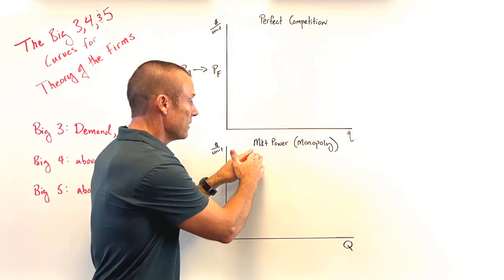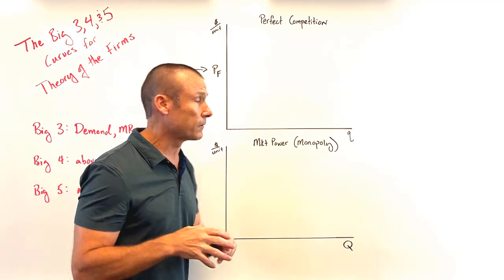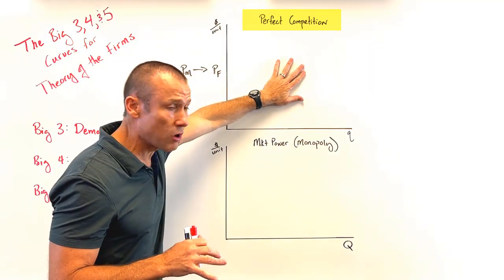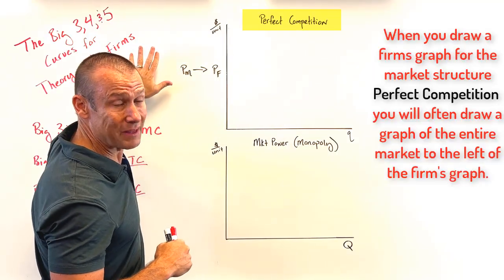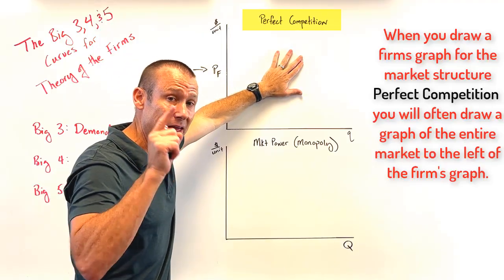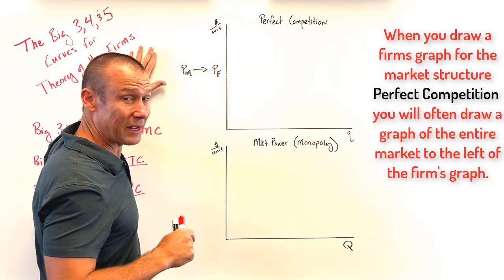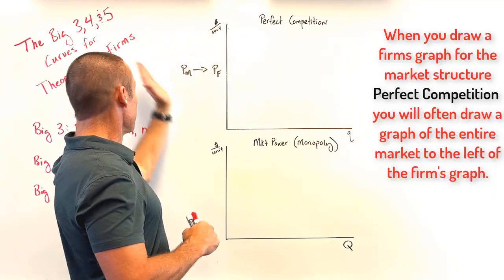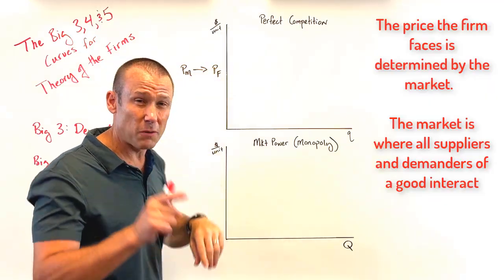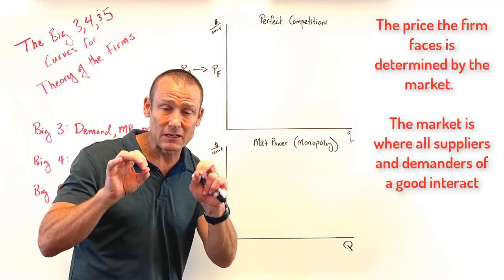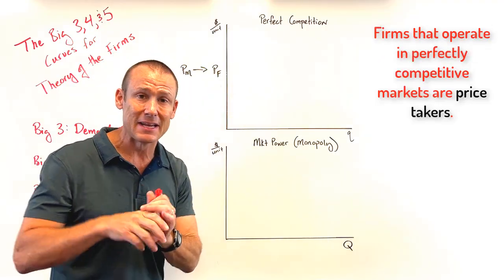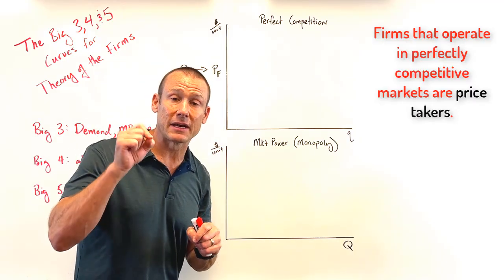Our two major market structures are perfect competition and then some type of market power — monopolistic competition or monopoly. For perfect competition, remember you often draw a market graph on the left and a firm graph on the right. You go to the market graph to find the market price, then bring that price over to the firm. In perfect competition, a single firm is a price taker — they take the market price, and that becomes their price.